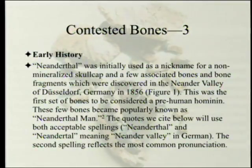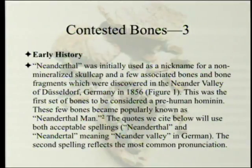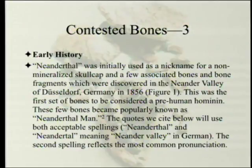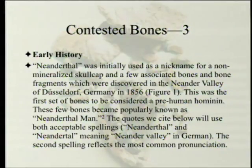Moving on to early history: 'Neanderthal' was initially used as a nickname for a non-mineralized skull cap and a few associated bones and bone fragments discovered in the Neanderthal Valley of Düsseldorf, Germany, in 1856. They still had those bones in the age of photography. This was the first set of bones to be considered a pre-human hominin — we need a bridge between apes and man, and here we have it. Both spellings, Neanderthal and Neanderthal, will be used; in German both are pronounced 'Neanderthal,' meaning Neander Valley.